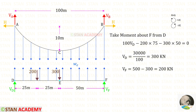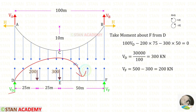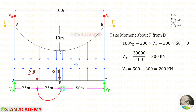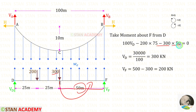Now in the girder, let us find the vertical reactions VED and VF. First let us find VED. For that, let us take moments about F. VED is acting in the clockwise direction so it will be positive, and the distance is 100, so 100 VED. This 200 kN load is acting in the anticlockwise direction, negative, distance is 75. This 300 kN load is anticlockwise, negative, distance is 50. For VED we will get 300 kilonewton.